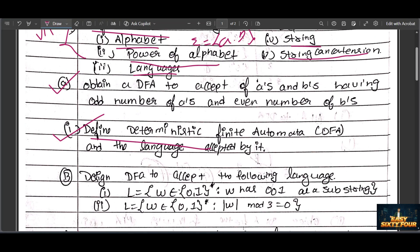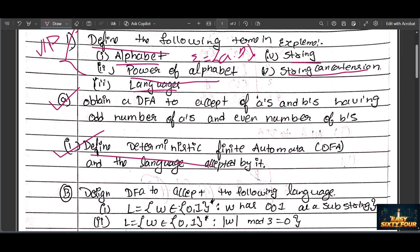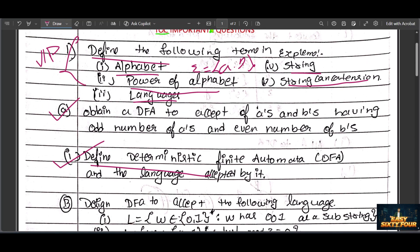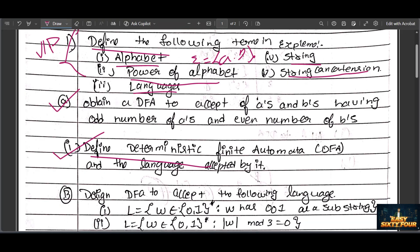Design a DFA to accept a's and b's having odd numbers and even numbers - this is the easiest question. Also, design a DFA that accepts strings of a's and b's ending in ab or ba. I can guarantee one question will appear from these four questions.